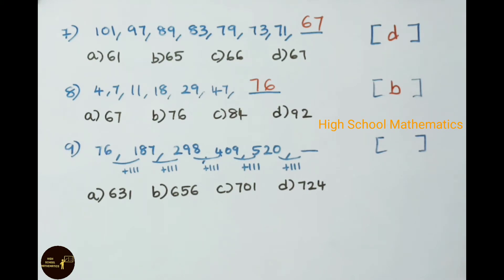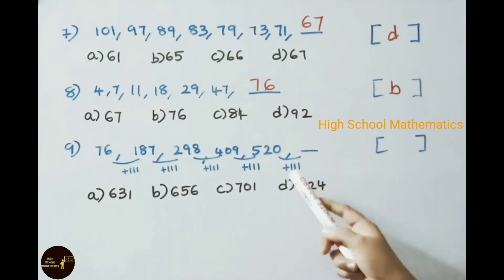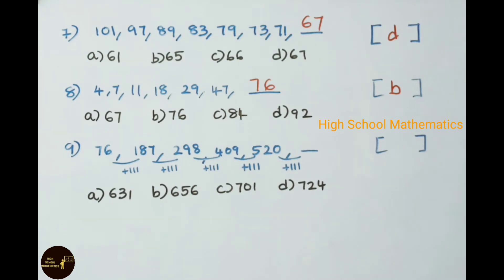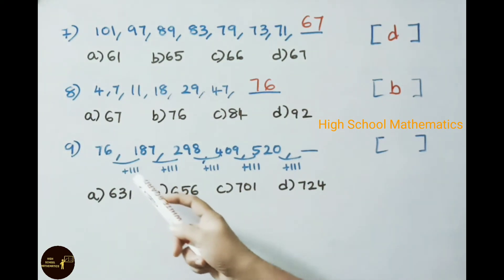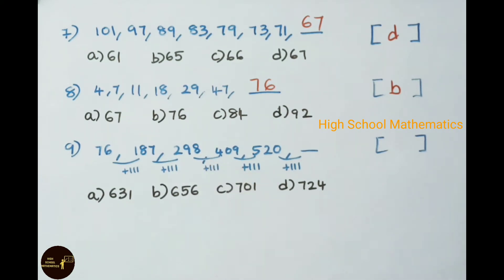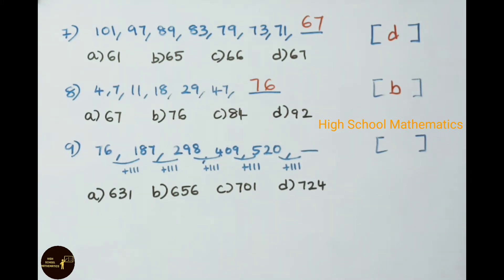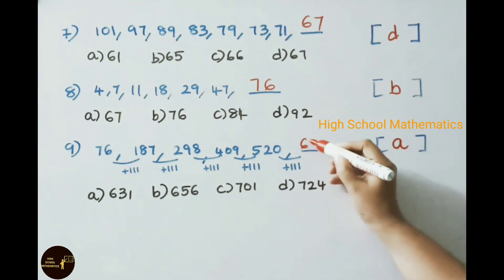Ninth practice problem: 76, 187, 298, 409, 520 — find the next term. It is an addition series: 76 plus 111 is 187, 187 plus 111 is 298, and so on. So 520 plus 111 is 631. The answer is option A, 631.